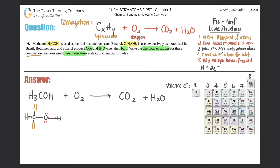Now draw O2: two oxygens, each with six valence electrons, so put six dots around each. Make a single bond first and check the octet — each oxygen only has seven electrons, so that's not satisfied. We need to make a double bond. Now each oxygen has eight electrons, so O2 is drawn with a double bond between the two oxygens.